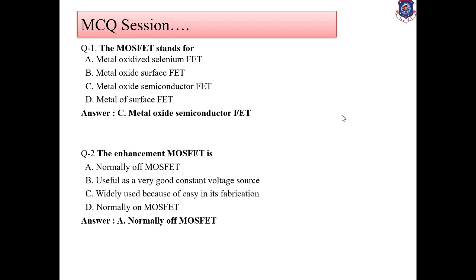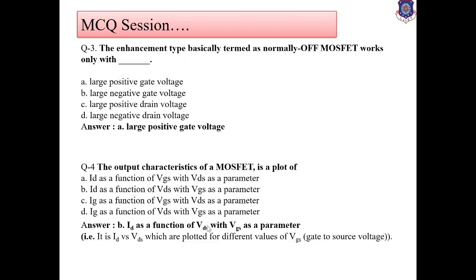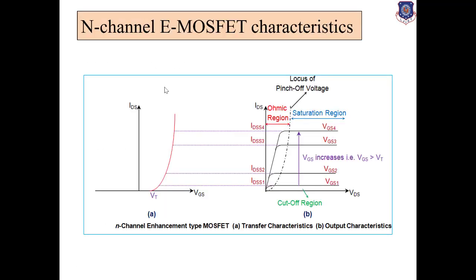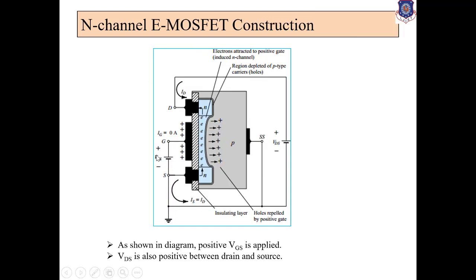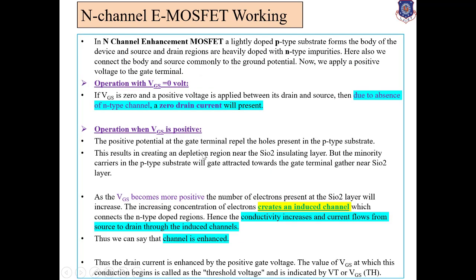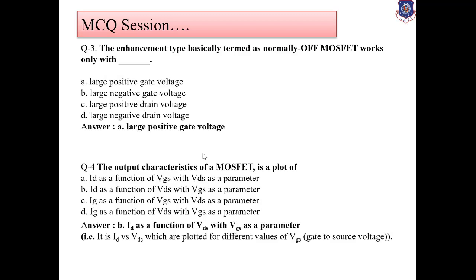MCQ session. Question 1: MOSFET stands for Metal Oxide Semiconductor Field Effect Transistor. Question 2: The enhancement MOSFET is a normally off MOSFET — normally open means normally off. Question 3: The enhancement type, termed as normally off MOSFET, works only with a large positive gate voltage, as we can realize from the working diagram. N-channel E-MOSFET will have a positive gate voltage.